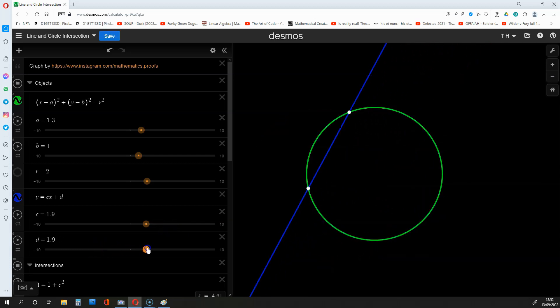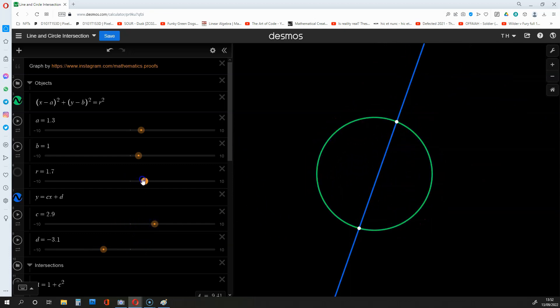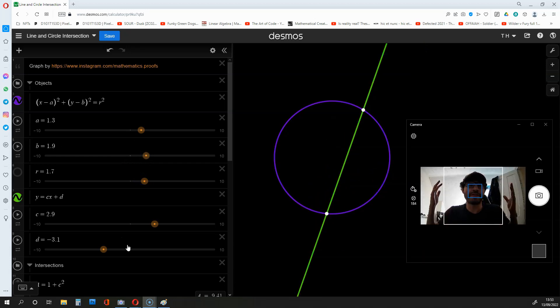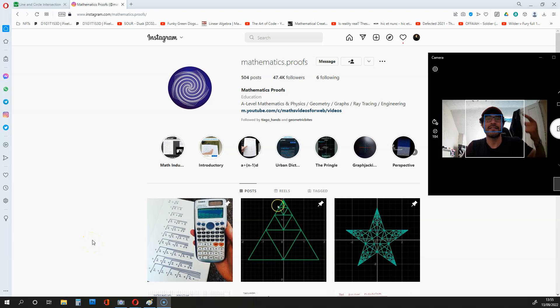As you can see, the intersections change as you play around with the variables. So it's a pretty cool graph. If you have any questions related to this video, leave them in the comments section below, and I'll try to respond as soon as I can. For more mathematics videos like this, ensure you are subscribed to my channel. For more maths content, visit mathematics.proofs on Instagram. Thanks for watching, and see you in my next video.